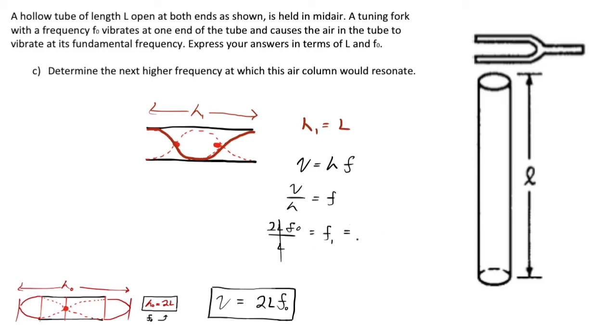So quite simply, the second harmonic, the next frequency after the fundamental that gives me a standing wave, is equal to two times the first, two times the fundamental frequency.